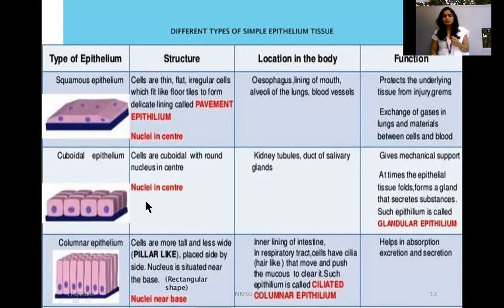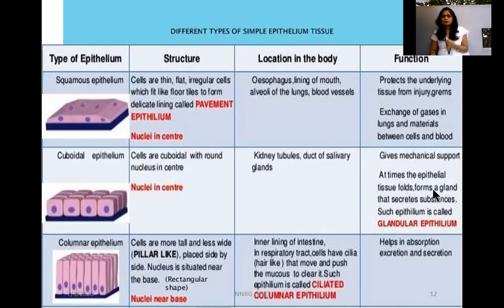Cuboidal epithelium has cube-shaped cells with one round nucleus. They are present in the kidney tubules and ducts of salivary glands. The function of cuboidal epithelium is to provide mechanical support and to form glands that create substances like hormones. Because they are present in glands and secrete substances, they are also called glandular epithelium.